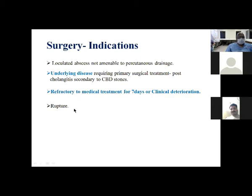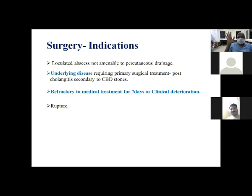Ruptured liver abscess carries a very poor prognosis — mortality of 30–40% without immediate intervention. Treatment: perform a liberal laparotomy. Do not attempt minimally invasive surgery unless very experienced. Open the cavity, identify the abscess, evacuate without using fingers, keep one drain in the cavity and one in the peritoneal cavity, wash the peritoneal cavity thoroughly, and preferably suture skin alone without closing the rectus sheath — to allow repeated washouts. Even with all this, mortality remains 25–30%.